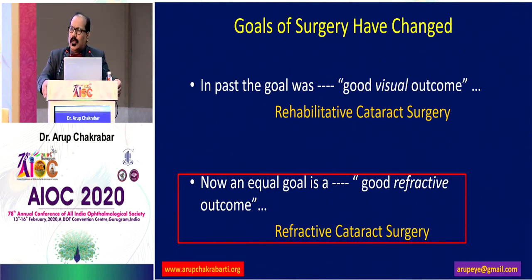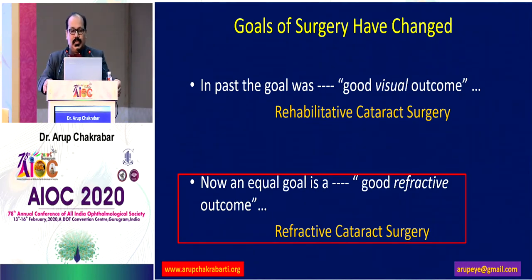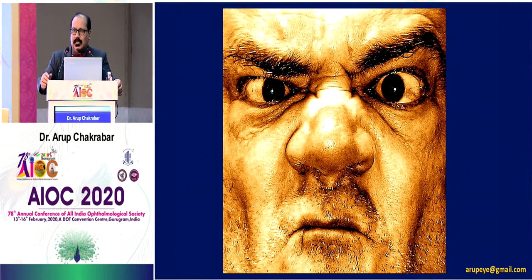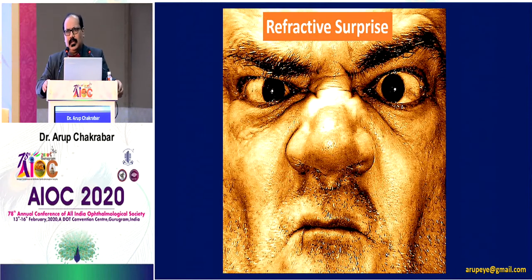Those of us who have been in the field of cataract surgery for quite a long time have seen the NSA that has taken place. We have witnessed that the goals of surgery have changed from rehabilitative surgery. We have moved on to refractive cataract surgery, and most of the time we are able to give spectacle-free vision to a patient at the desired distance. But from time to time we come across patients who are grumpy and dissatisfied. What I'm going to talk about is refractive surprise and how to avoid it.